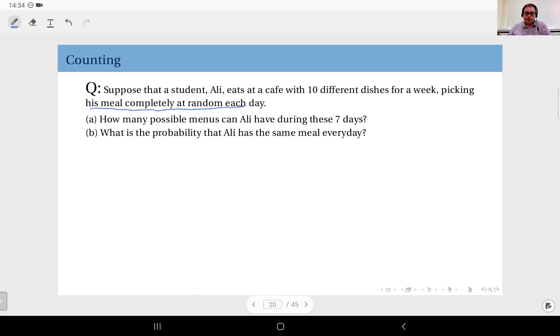First we are asked the number, the count of such an event. How many possible menus can Ali have during these seven days? Essentially, this will describe the sample space. So in this part A, we are actually finding the number of total possible outcomes when Ali picks his meals at random during seven days among 10 different dishes. Now, to find the solution to this,